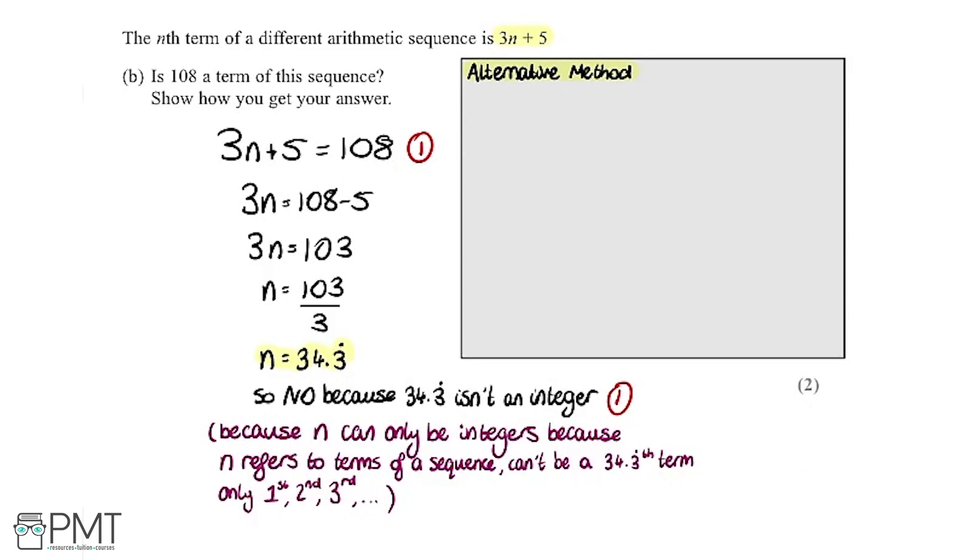I also want to point out here an alternative method you could have used. This one involves a bit more of trying numbers. For example, we know our sequence is 3n plus 5, and we need to think what sort of numbers would get us around 108. So if I try 30, we could try n is 30, we get 3 multiplied by 30 plus 5, which is 95. So I might try something else. I'm going to try n equals 34, so we get 3 multiplied by 34 plus 5 equals 107.